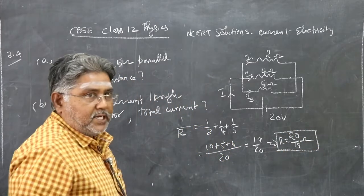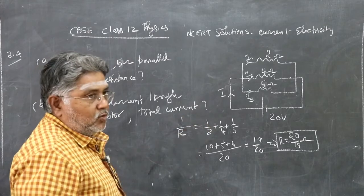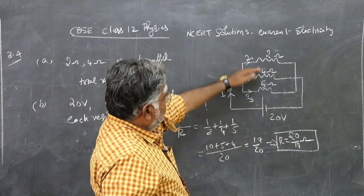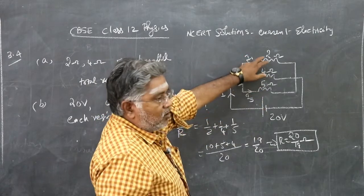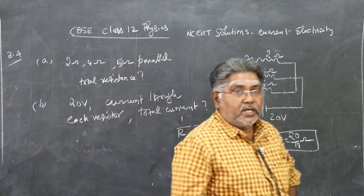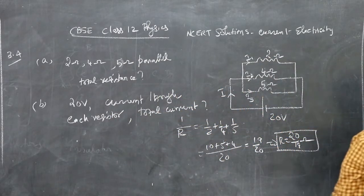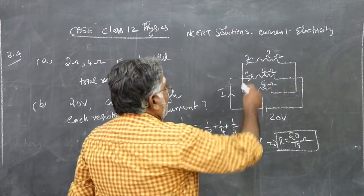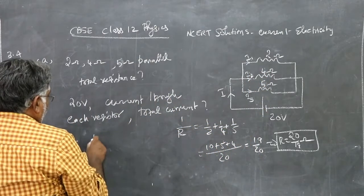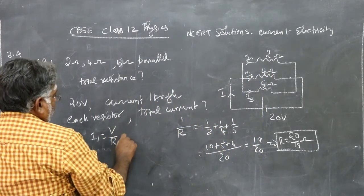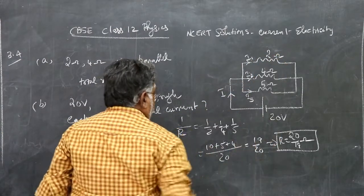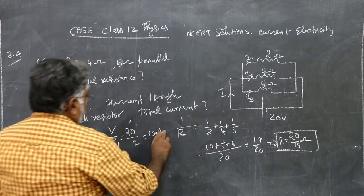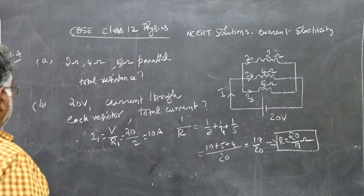The effective resistance is 20/19 ohm. Now to find current through each branch — first method: the voltage across all resistors is the same and equal to the battery voltage, since they are connected in parallel. Calling the currents I1, I2, I3: I1 = V/R1 = 20/2 = 10 ampere.